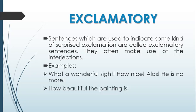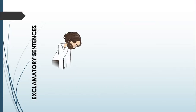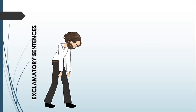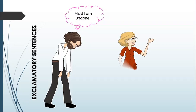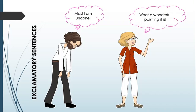Let's look at some examples. This man first said 'Long live the king' — and perhaps the king is dead. So he says 'Alas! I am undone' — the one he supported is there no more. And then we have this fine lady who appears to be a museum curator or guide, standing perhaps in front of the Mona Lisa, saying 'What a wonderful painting it is!' — pointing at that enigmatic smile. These are the exclamatory sentences.